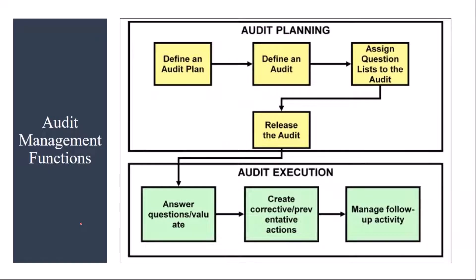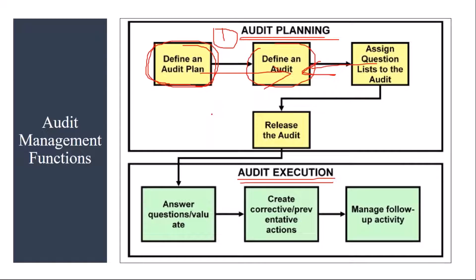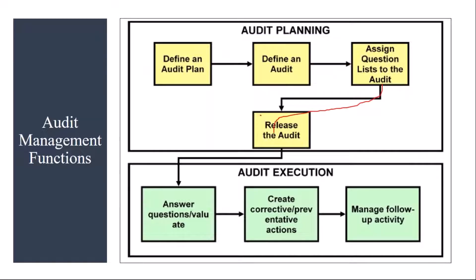Audit management in the SAP system works in two phases on a broader level. The first phase is audit planning, and the second is audit execution. In the planning phase, you define an audit plan, from which you define the audit. Then you assign the question list to the audit, and after that, you release the audit so that it can be executed.